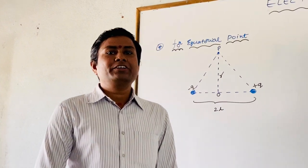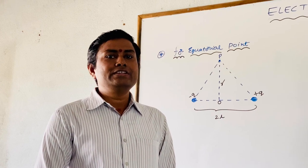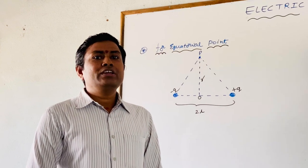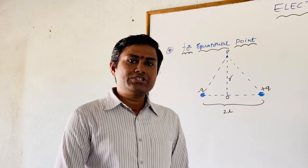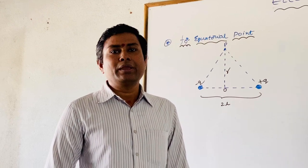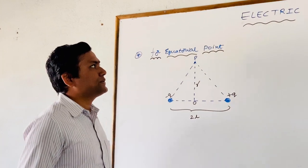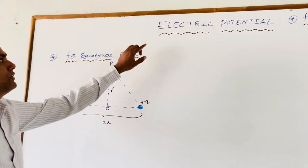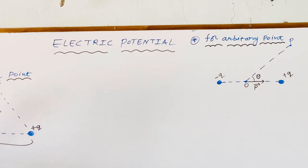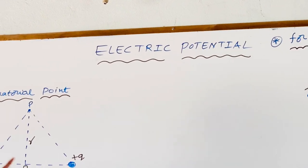Dear students, I am Shiva, faculty of physics. I hope you are doing well in your studies with the help of these videos named as BRICS. In the last session, we studied the definition of electric potential and how we can calculate the electric potential due to the dipole at its axial point. Now, in this episode, we are going to deal with electric potential for the arbitrary point as well as for the equatorial point, both for the dipole.